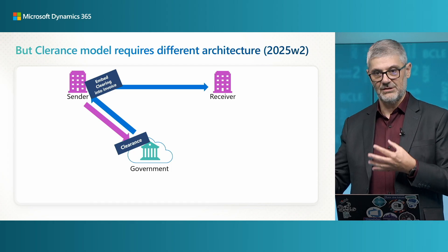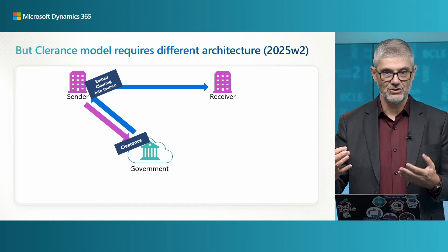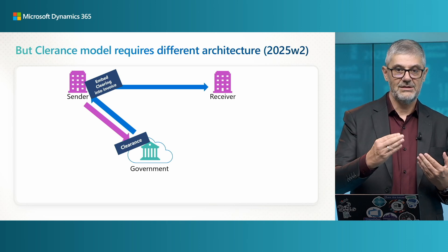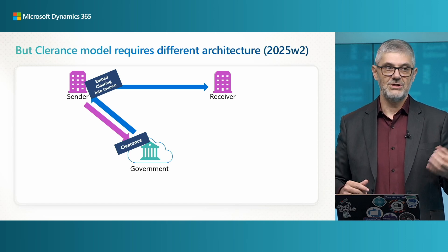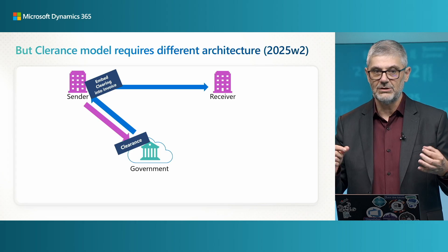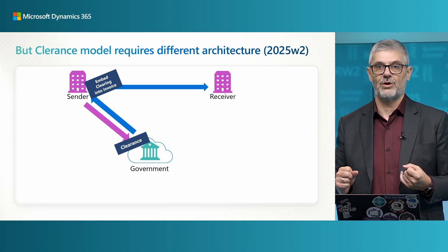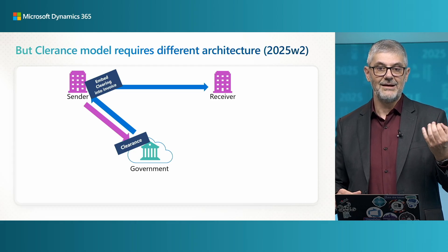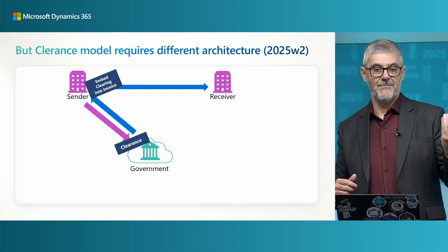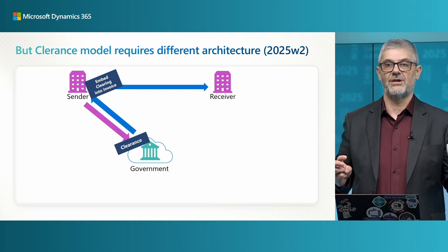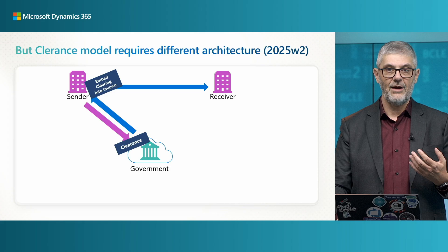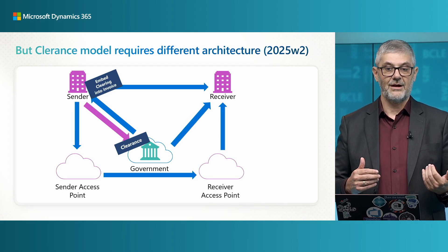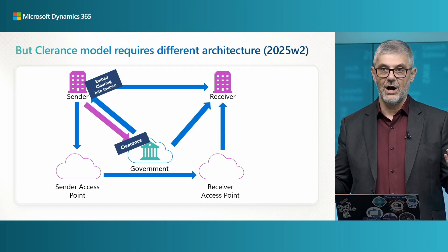They will check if everything is correct relative to local regulation. When everything is okay, they will send you back information — it can be a QR code, it can be a GUID, whatever, depending on the localization. You will then have this embedded clearance data in your invoice. With that embedded, you can send to the receiver — directly via email or using one of the existing connectors to send via sender access point.